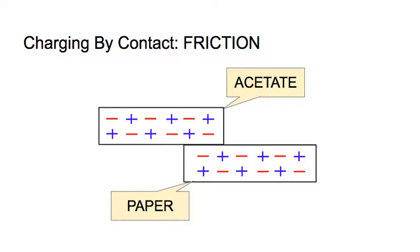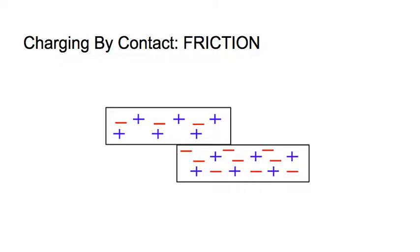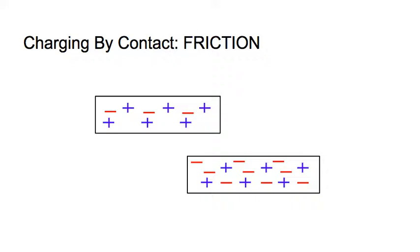Acetate, not being strong enough to prevent that from happening, is going to lose electrons and become positively charged. Paper will become negatively charged, so let's move forward with this animation. There they go, and you can kind of see the negative charges moving.